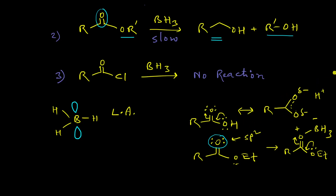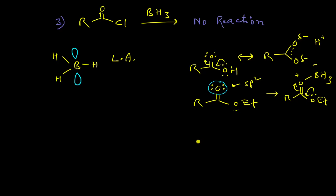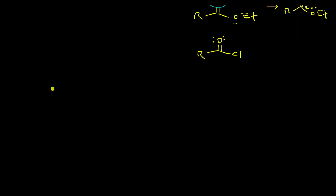In acid chlorides, the oxygen center is still the most nucleophilic center and it possesses Lewis base character. Boron attacks this Lewis basic center first, and then transfers one of its hydrogen atoms as hydride to the electrophilic carbonyl carbon atom. Let us look at the mechanism to understand this more clearly.